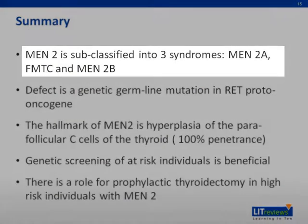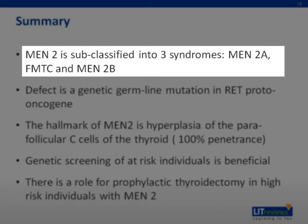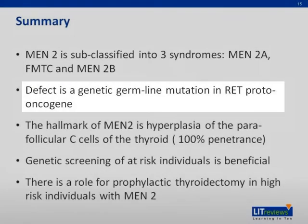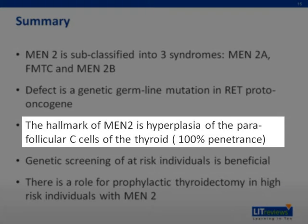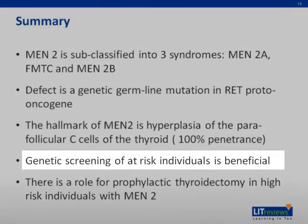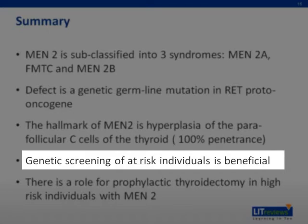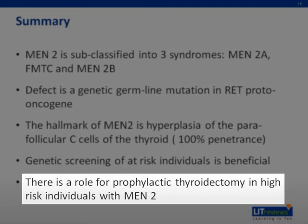In summary, MEN2 is subclassified into three syndromes: MEN2A, familial medullary thyroid carcinoma, and MEN2B. The defect is a germline mutation in the RET proto-oncogene. The hallmark of MEN2 is hyperplasia of the parafollicular C cells of the thyroid gland, and penetrance is 100%. Genetic screening of at-risk individuals is beneficial, and there is a role for prophylactic thyroidectomy in high-risk individuals with MEN2.